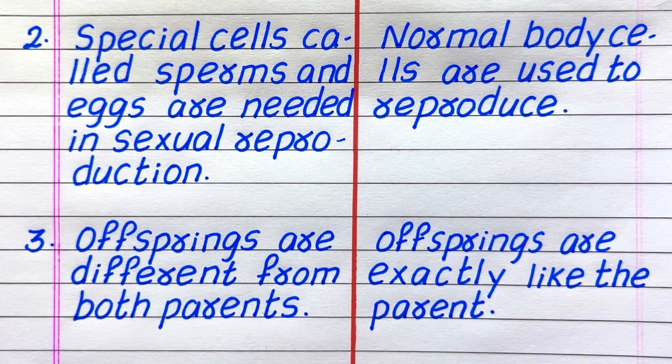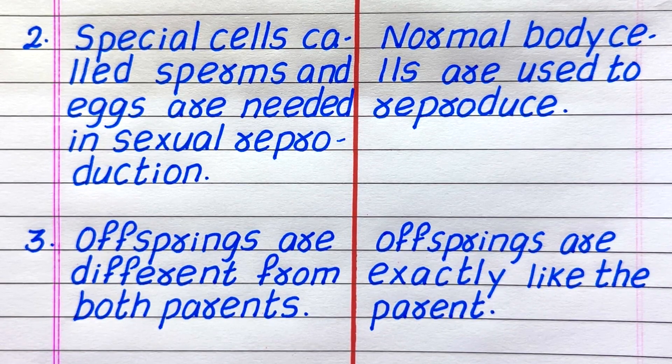Offsprings are different from both parents in sexual reproduction, while offsprings are exactly like the parent in asexual reproduction.